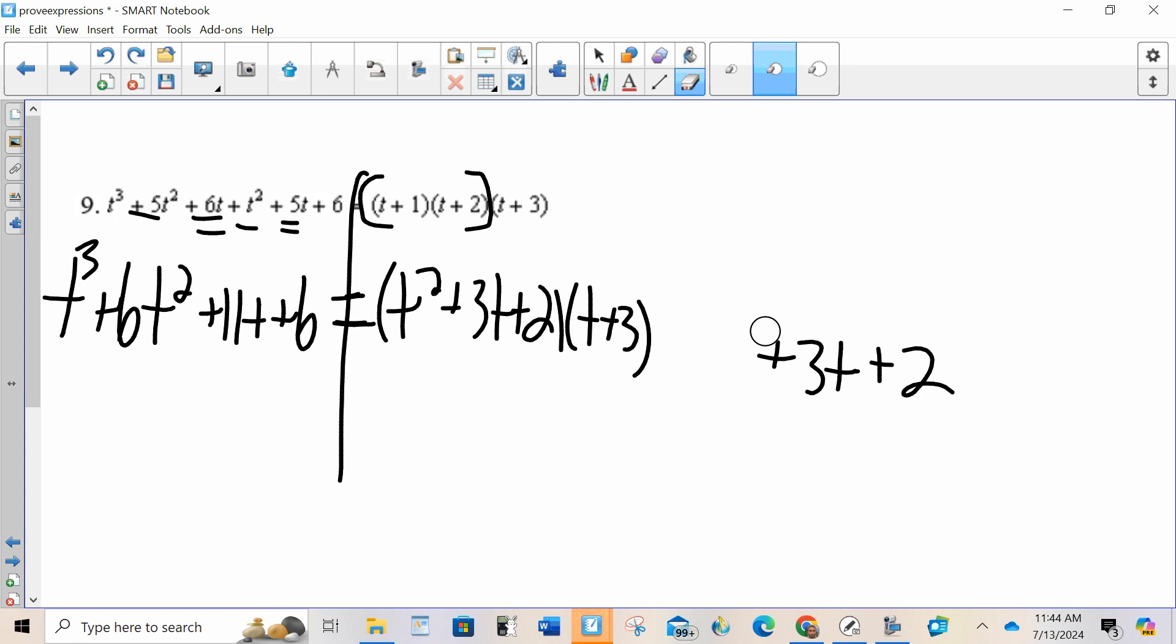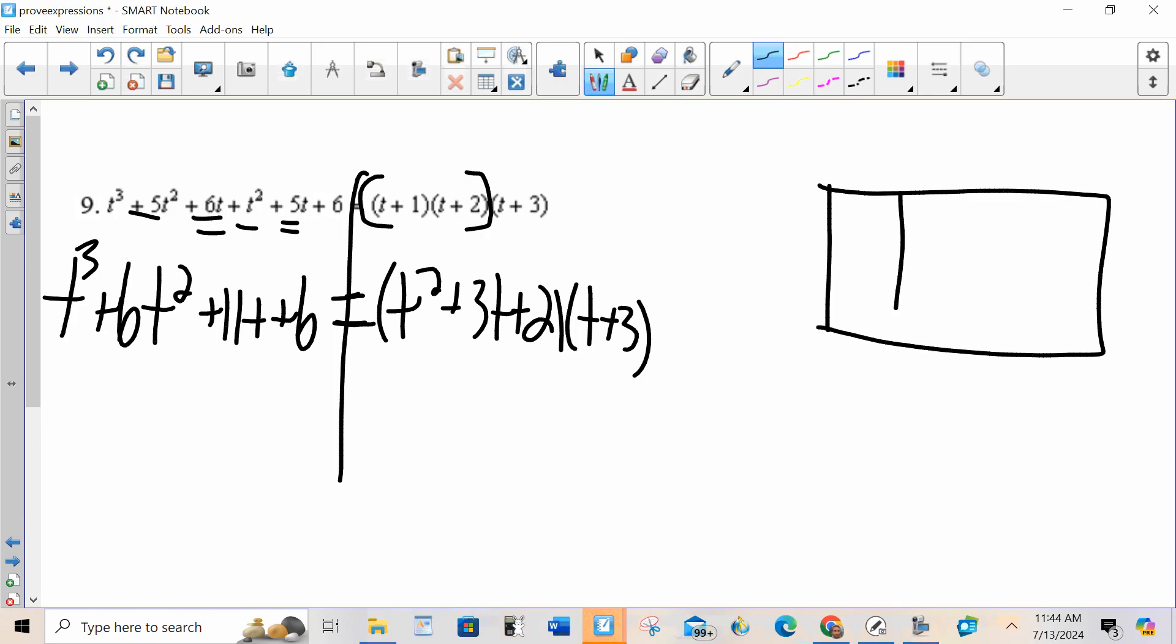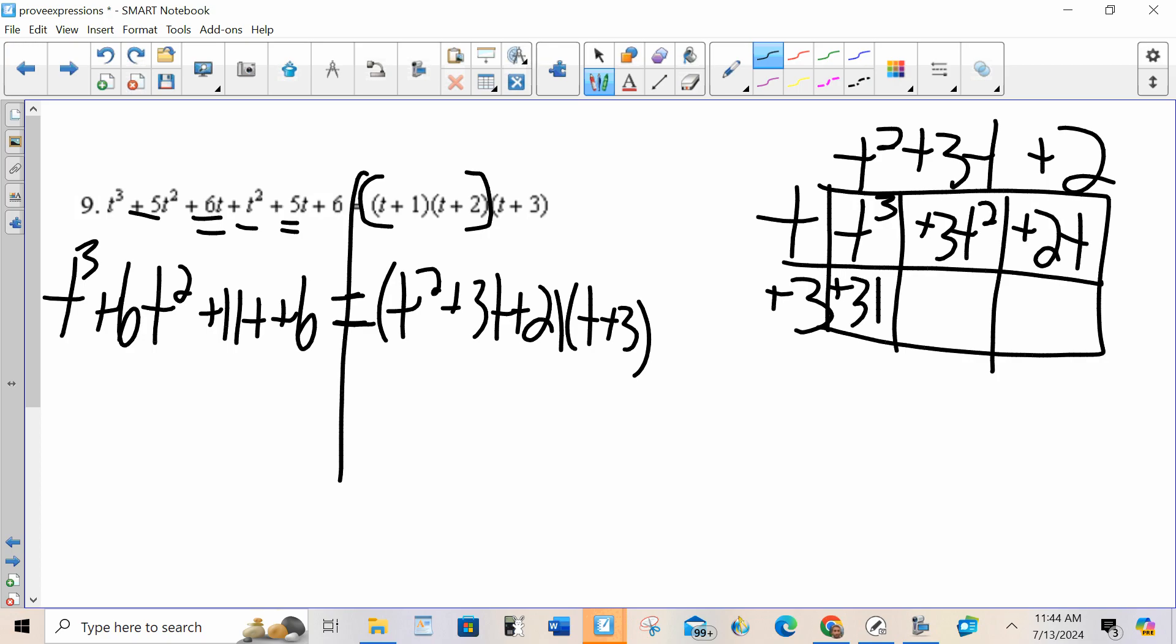So now to multiply those I do another box. So now I have a 3 by 2 box. I've got t squared plus 3t plus 2. I've got t plus 3. I've got t cubed plus 3t squared plus 2t plus 3t squared plus 9t plus 6.